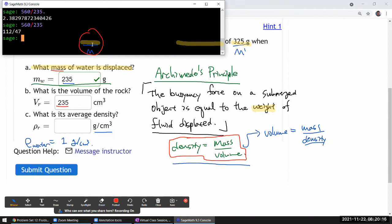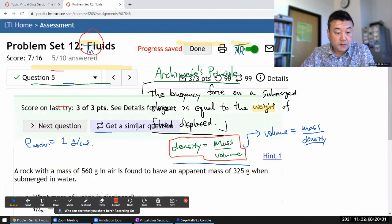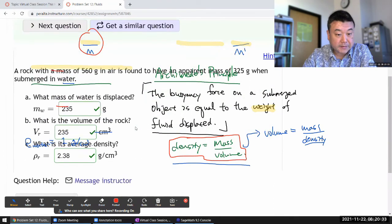Putting that period there forces you to do decimal approximation calculation. So the average density of the rock must be 2.38 grams per cubic centimeter—2.38. All right, that's it.